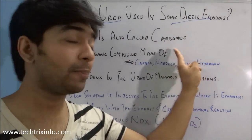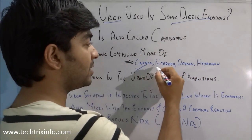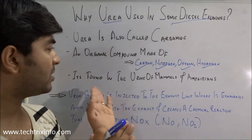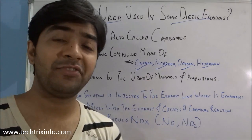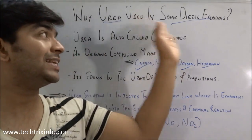Urea is also called carbamide. It is an organic compound made of carbon, nitrogen, oxygen, and hydrogen. It's found in the urine of mammals and amphibians. Now let's learn why and how urea is used in diesel engines and what's the effect of it.